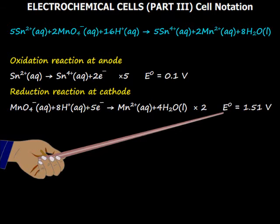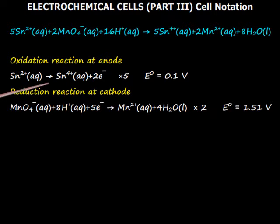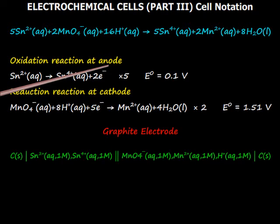Here there is no solid phase in reduction and oxidation reaction. So we have to use inert electrode for both cathode and anode. For example, graphite electrode. So for anode, we first write the graphite electrode like this. Then a single vertical line to indicate the phase interface of the anodic compartment. Then we write all the aqueous phase ions mentioning their concentration within parenthesis and separate it by comma.